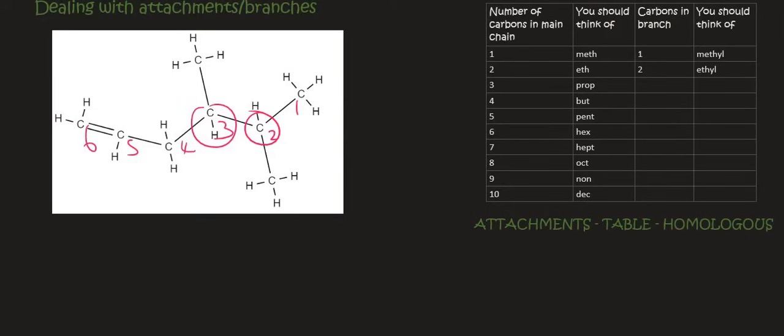But when you have a double bond or any other kind of functional group — anything that's not an alkane — you must label the molecule from the side that is closest to the functional group, not the branch. It's only with single-bond molecules like alkanes and haloalkanes that you label from the side closest to the branches. For all other molecules with different functional groups, you label from closest to the functional group.